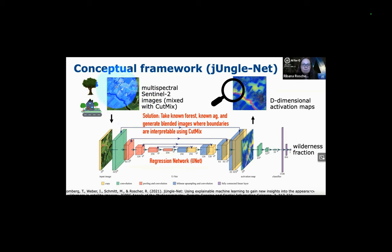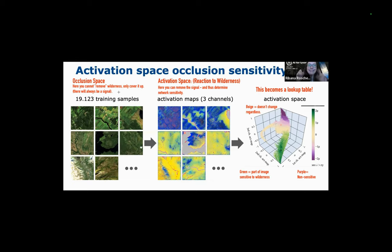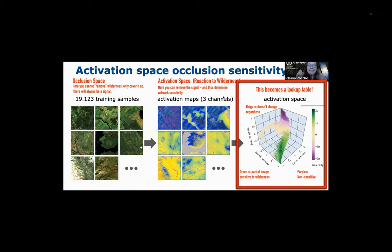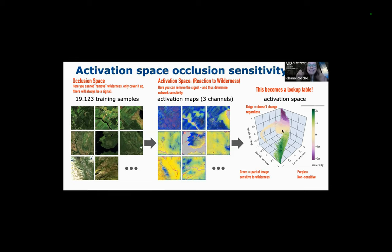You can see one of these synthetic images — it's kind of like a crosshatch — and for any specific point in the image they know whether it's wilderness or a synthetic region. They did this using cut mix applied to a regression network called UNet, and they named this network JungleNet. They got close to 20,000 training images, and similar to the previous studies, they wanted to test the network activation. Here you have the training images and the activation maps, and then they constructed these 3D activation spaces. The goal was to build a lookup table of where in the images the network was activated by wilderness, when it wasn't, and when it did nothing.